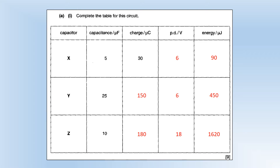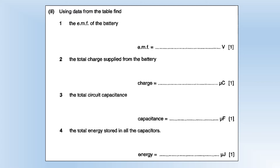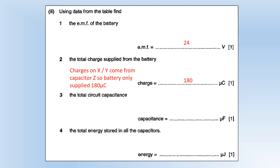The EMF of the battery is just the sum of the two potential differences: 6 plus 18 equals 24 volts. The total charge supplied from the battery is 180 microcoulombs — the battery supplied the 180 microcoulombs that capacitor Z has, and then Z supplied X and Y with charges. For total capacitance, the two parallel capacitors add together, then we use the reciprocal rule, giving 7.5 microfarads. Using ½CV² with total capacitance 7.5 and total potential difference 24 gives 2160, which is the sum of all the energies.